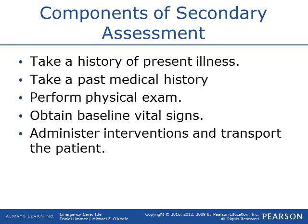Components of the secondary assessment include taking the history of the present illness — everything currently going on — and also getting a past medical history, because that may tie directly into the current illness or injury. Perform a physical exam of the chief complaint area if the patient is alert, or a head-to-toe assessment if they're unresponsive. Obtain baseline vital signs, administer interventions, and transport.